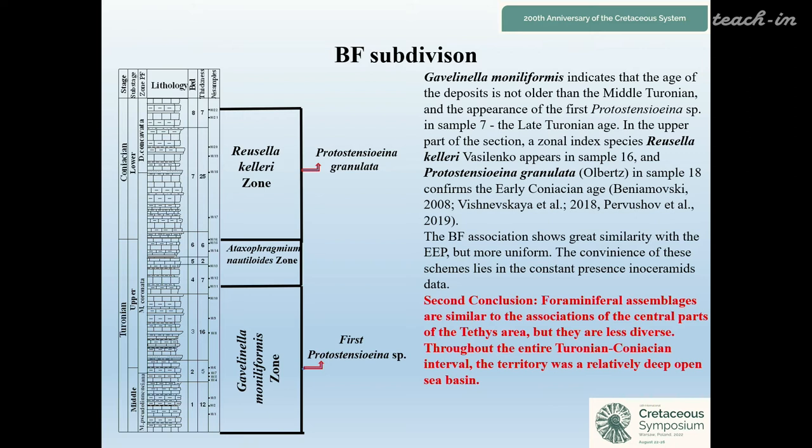The convenience of these schemes lies in the constant presence of reliable index taxa. This is very useful for stratigraphic purposes. Second conclusion: foraminiferal assemblages are similar to associations of certain parts of the Tethys area but are less diverse.